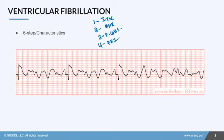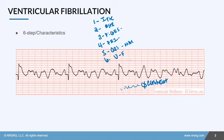The QRS complex is not measurable either — the ventricles are just quivering, not contracting, so there is no QRS complex. When you see all of this, it is obviously V-fib. Sometimes all you have to look for is a wavy baseline and you know that it's V-fib.